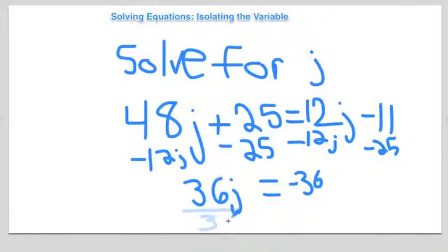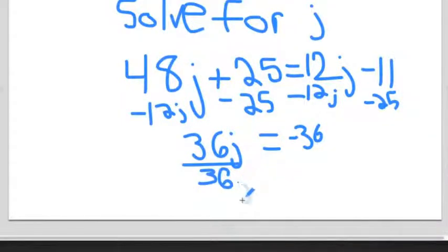You're going to want to check it back into your original equation, so you're going to multiply 48 times negative 1, you get negative 48, and you add 25 to get negative 23. And then 12j times negative 1 is negative 12 minus 11 is negative 23.